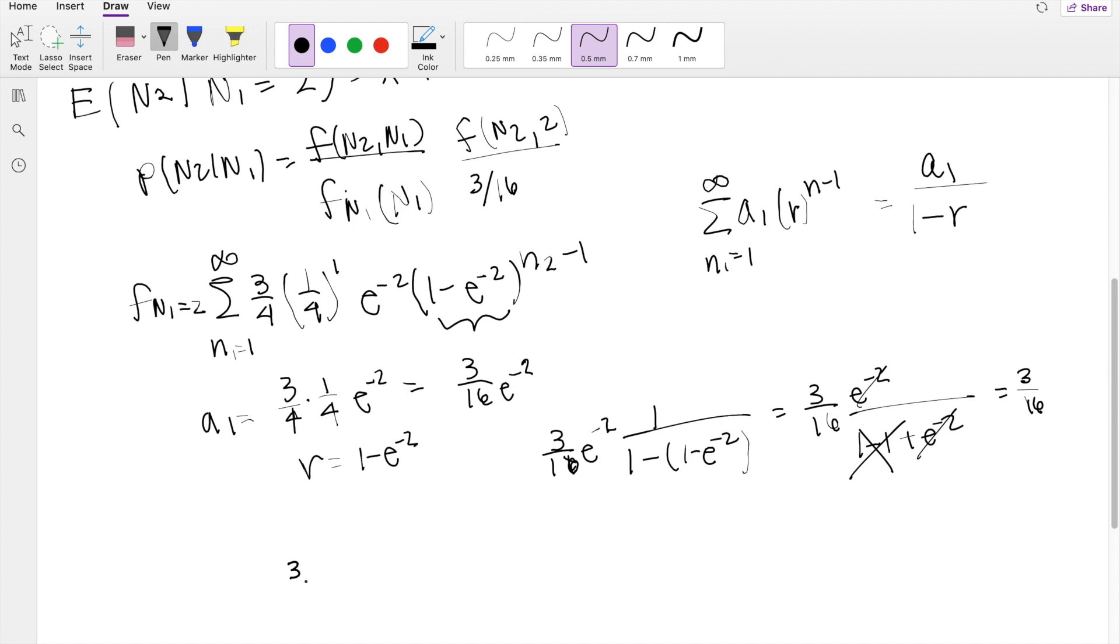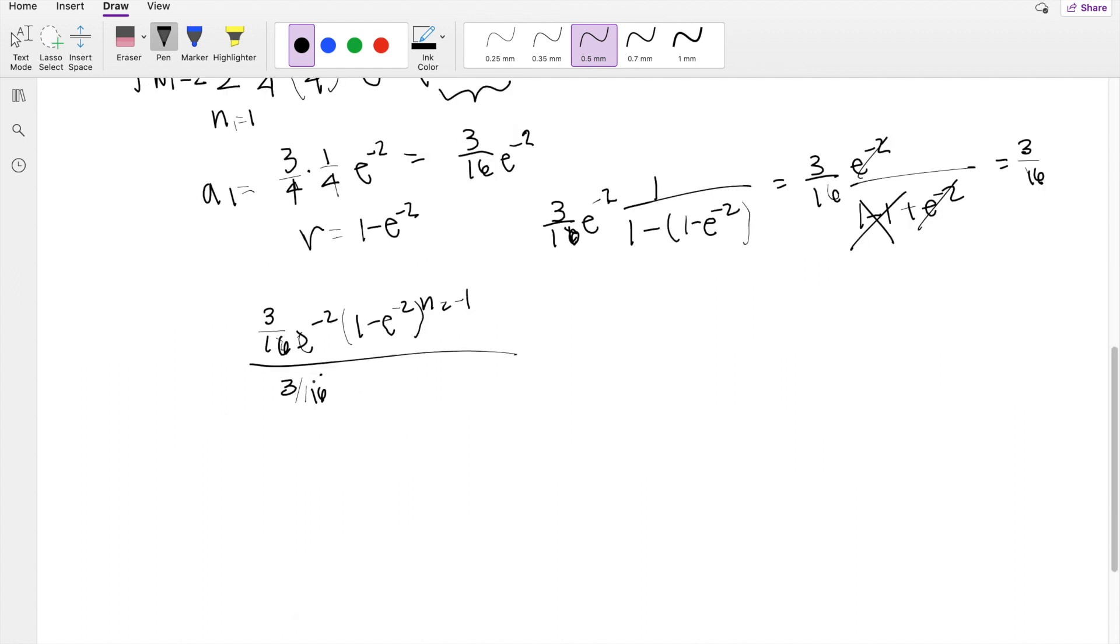So it's going to be 3 over 16, e to the negative 2, 1 minus e to the negative 2, N2 minus 1, divided by 3 over 16, so then the 3 over 16's cancel out, and you're left with e to the negative 2, 1 minus e to the negative 2, N2 minus 1.